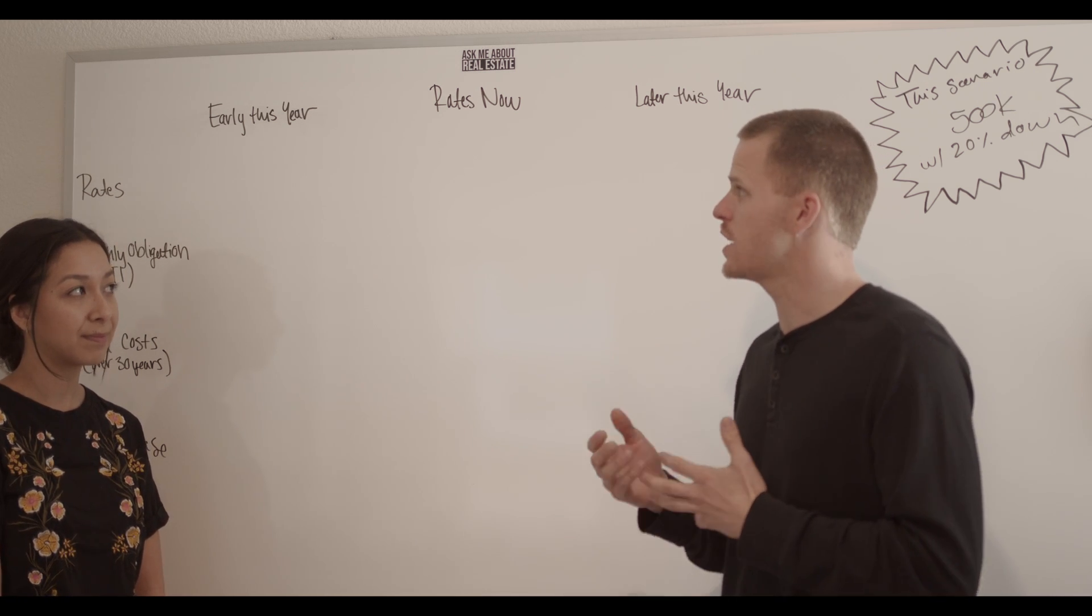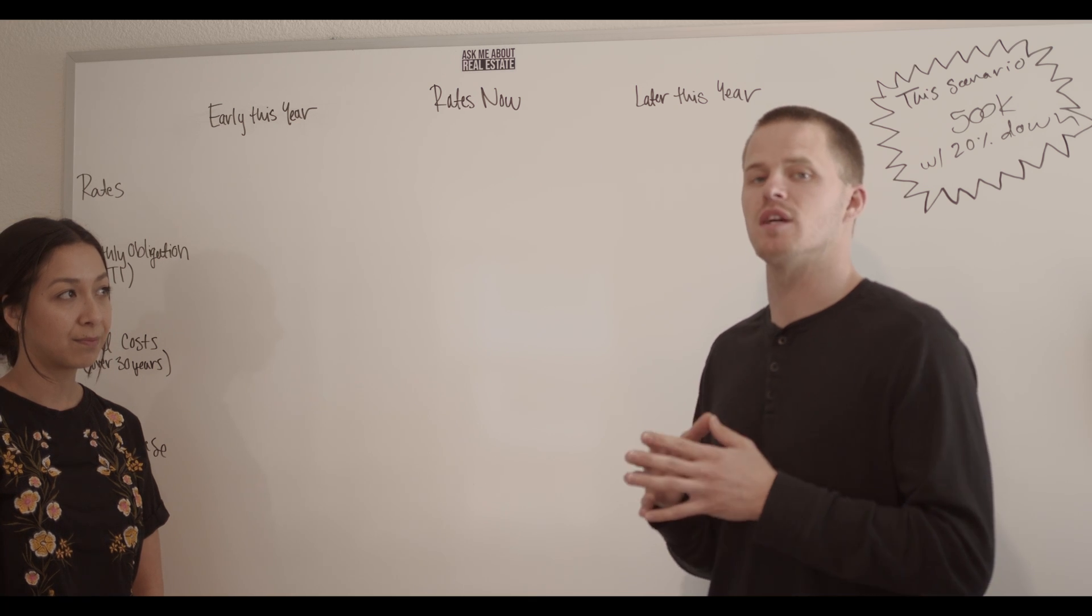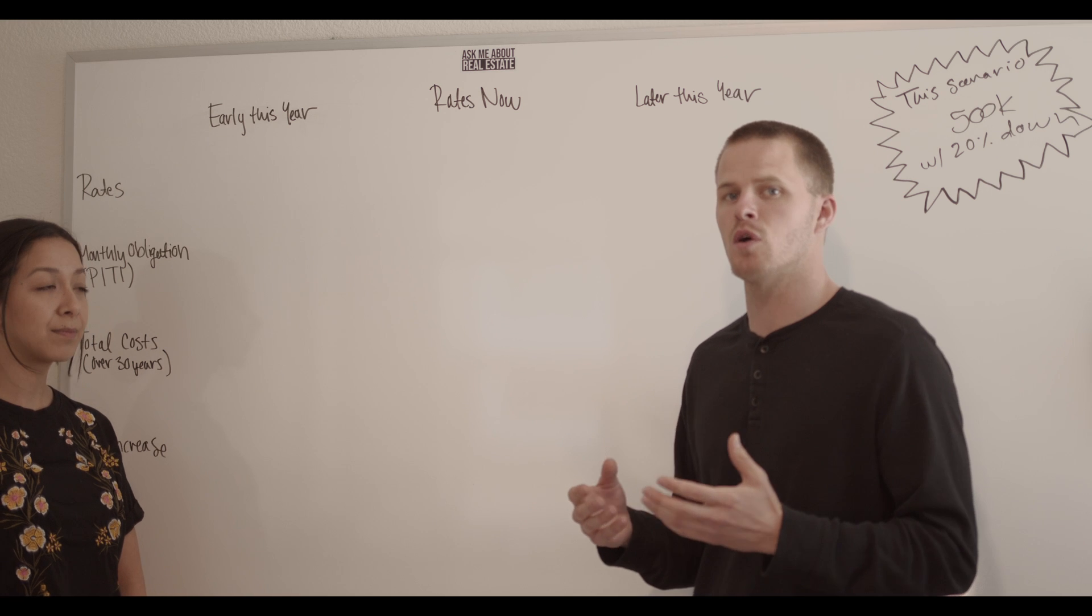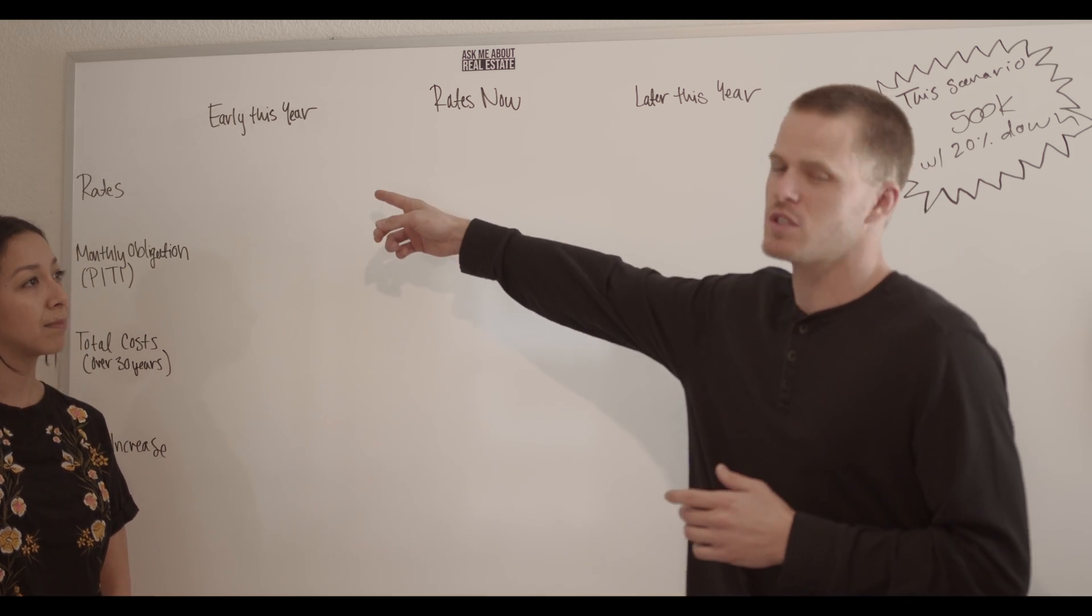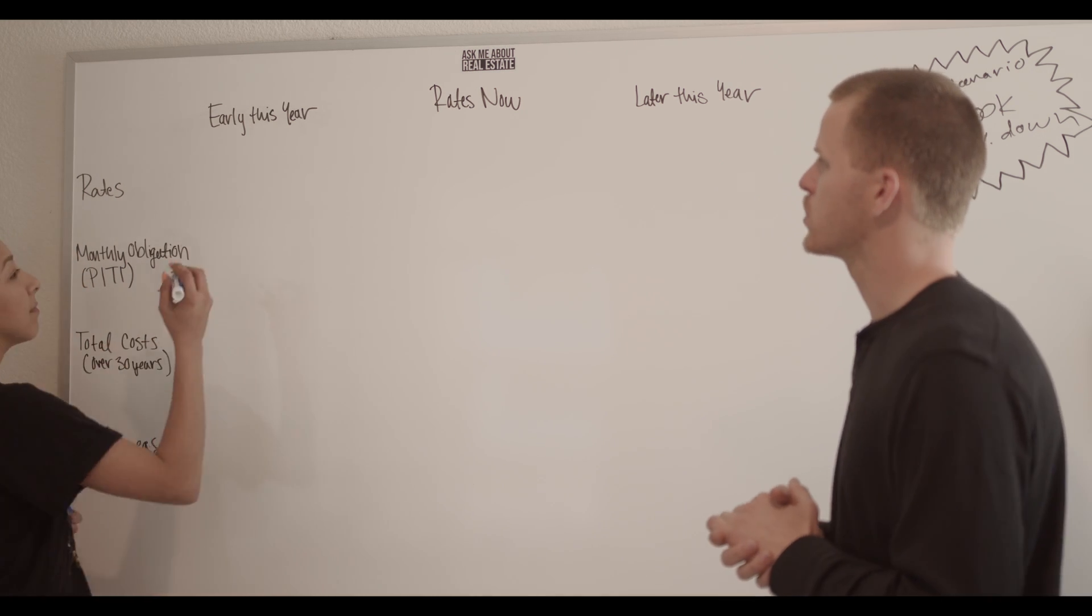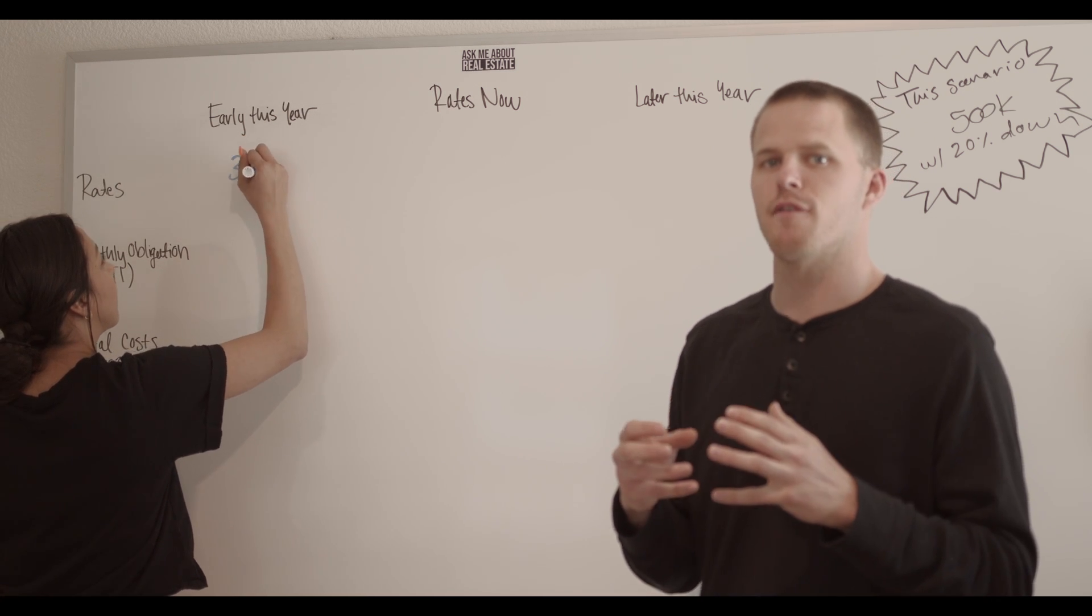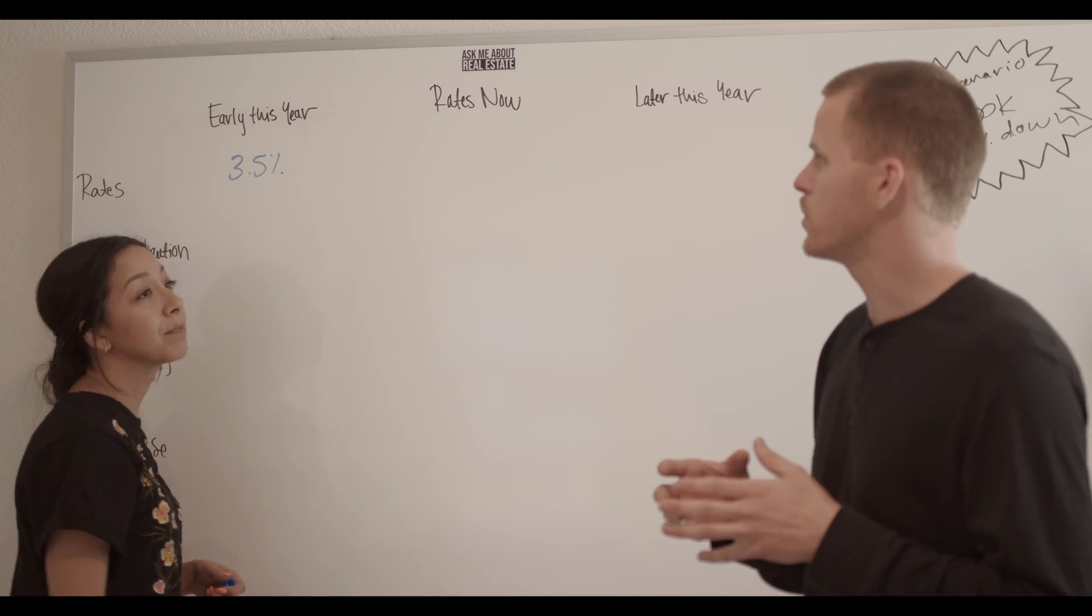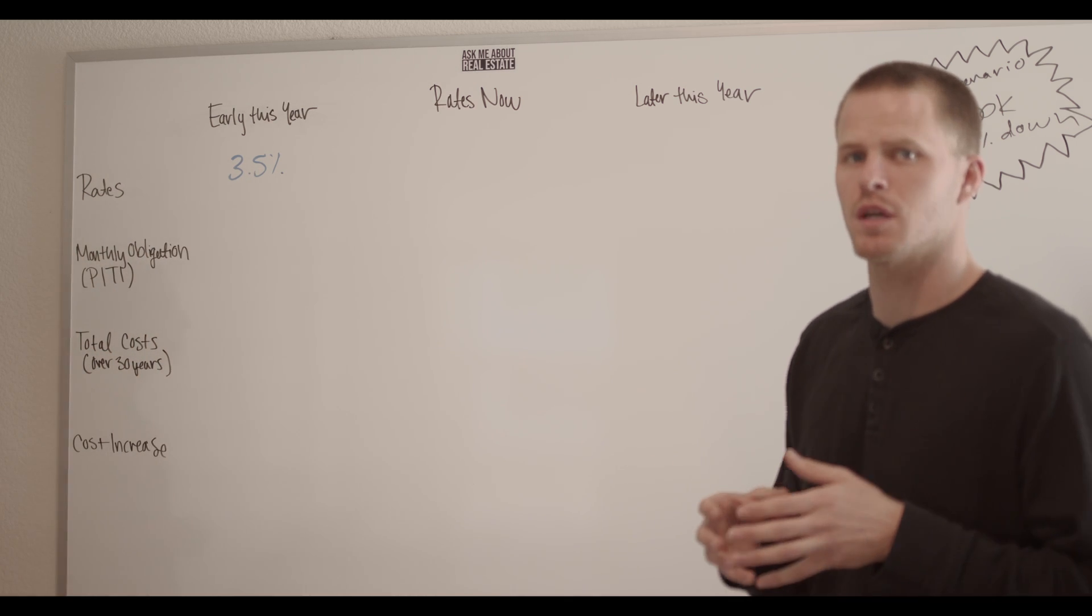So we're doing it here today with a fixed price of $500,000 so you get a general idea of how everything is going to go. And at the beginning of the year, earlier this year, interest rates were 3.5%.